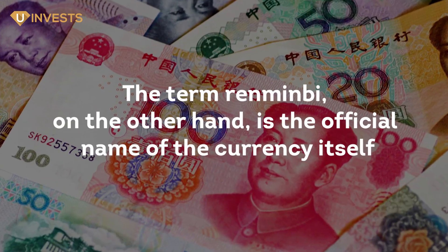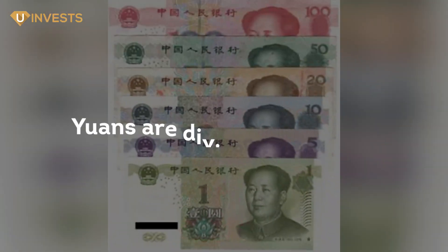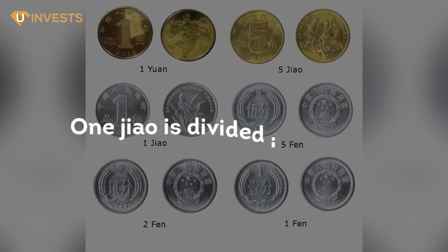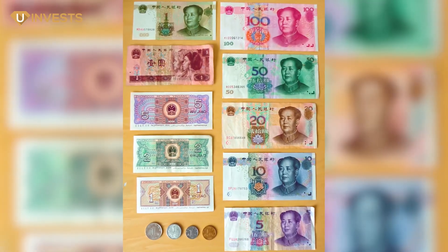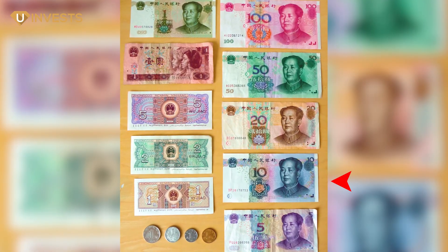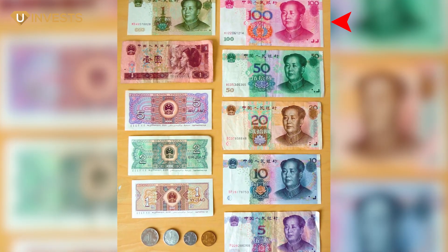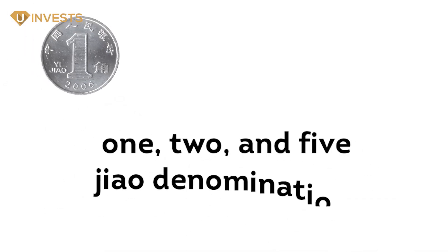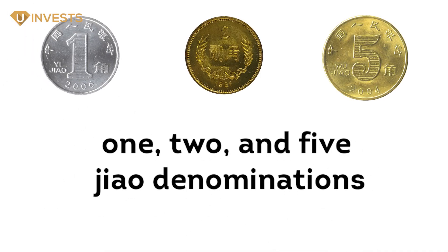The term renminbi, on the other hand, is the official name of the currency itself. Yuans are divided into ten jiao, and one jiao is divided into ten fen. Banknotes are printed in one, two, five, ten, twenty, fifty, and one hundred yuan denominations, as well as one, two, and five jiao denominations.